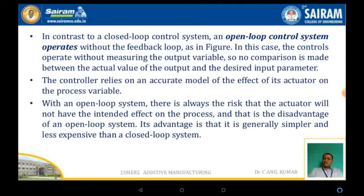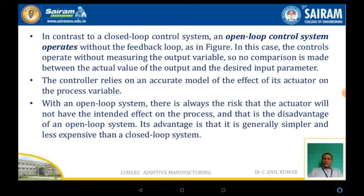In contrast with the closed loop control system, an open loop control system operates without the feedback loop. In this case, the control operates without measuring the output variable, so no comparison is made between the actual value and the desired output — the output is not compared with respect to the input. The control relies on an accurate model of the effect of the actuator on the process variable. With an open loop system, there is always a risk that the actuator will not have the intended effect on the process. That is the disadvantage of the open loop control system. Its advantage is that it is generally simpler and less expensive than the closed loop systems.